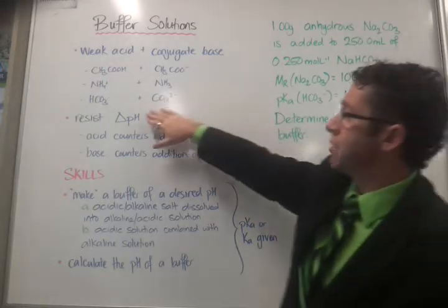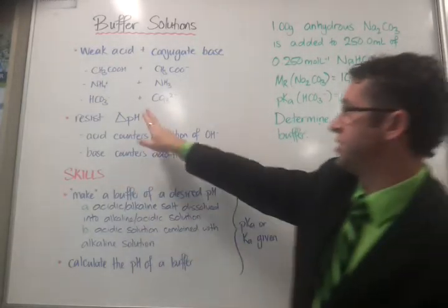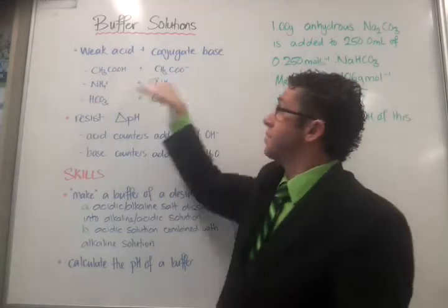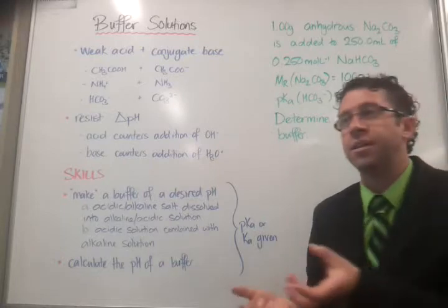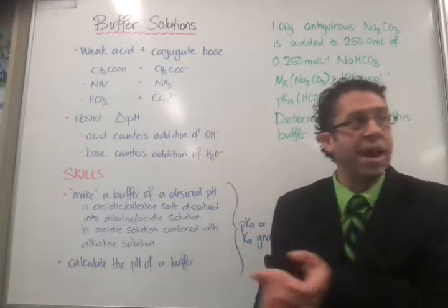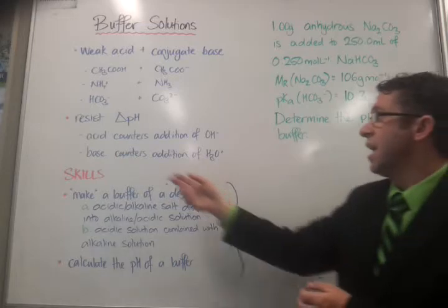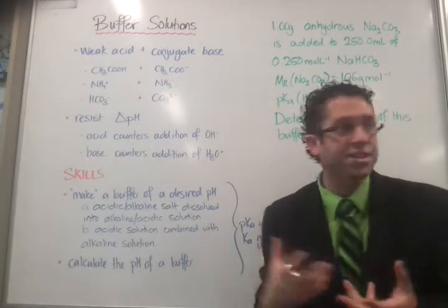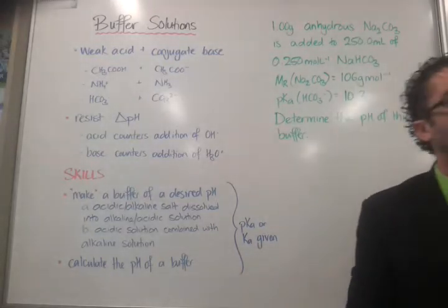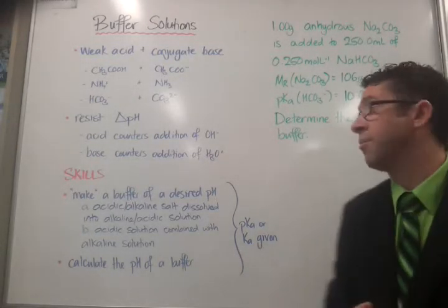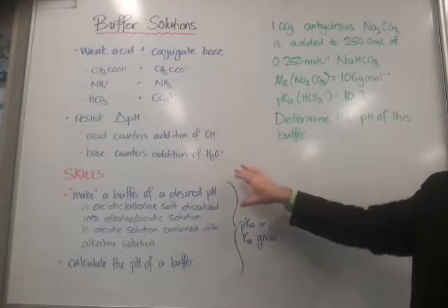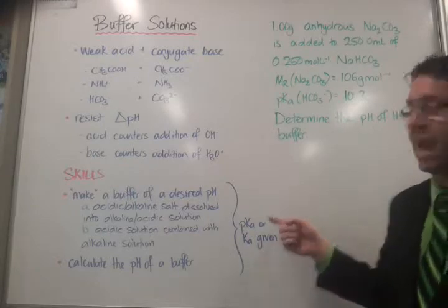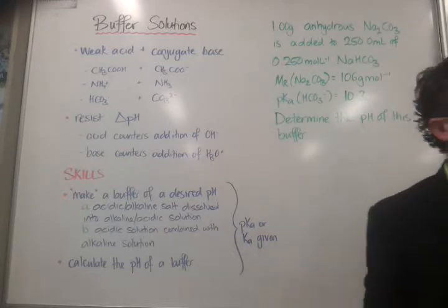What they do is they resist a change in pH, the little delta or triangle there means a change in. The acid in this partnership will counter small amounts of a strong base, so an increase in hydroxide ions. The conjugate base in these partnerships will counter the addition of a small amount of a strong acid, so the hydronium ions. You need to be able to show how to make a buffer of a desired pH, given the pKa or Ka for the acid in that partnership.